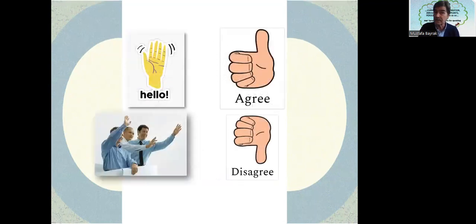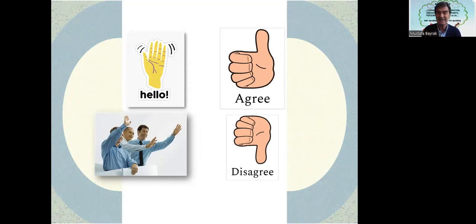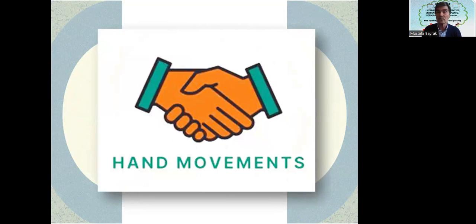Those three guys are saying maybe hello, or bye, or welcome with their hands. Agree — for example, this is a very famous sign. Disagree is like this. When we see this sign we understand that the person agrees with us. Hand movements — for example, handshaking is really a sincere movement.